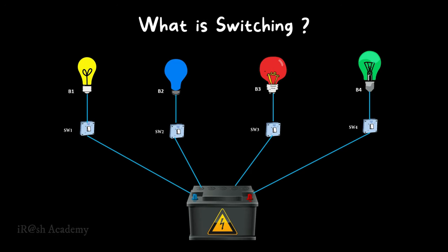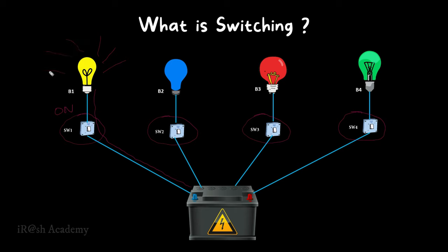What is switching? On the screen we can see four electric bulbs connected to one battery. Each bulb is connected to the battery with the help of a switch. When we put the switch in the on position, electricity flows through the bulb and it generates light. When we put the switch in the off position, electricity doesn't flow because the switch cuts the circuit, so there is no light.